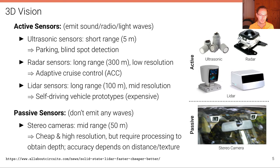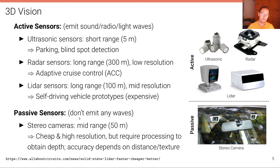Some self-driving efforts like Tesla rely purely on cameras, arguing that passive sensing should work because humans drive with just their eyes. Passive sensors also have the advantage of not interfering with each other, unlike LiDAR scanners which can crosstalk. In practice, however, many self-driving efforts use a combination of sensors for redundancy — fusing multiple, very different measurement principles theoretically yields higher system robustness.